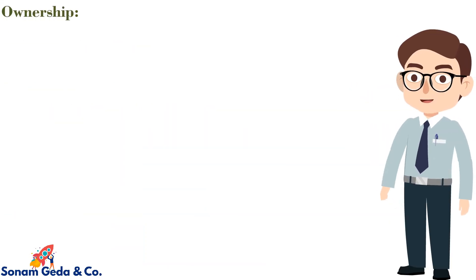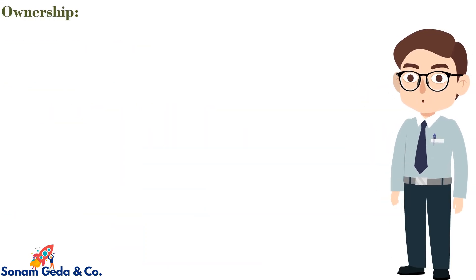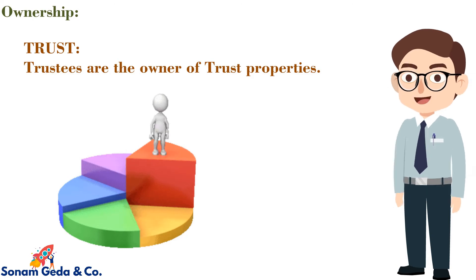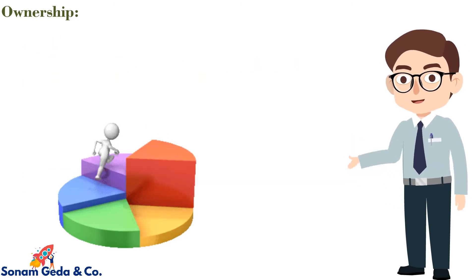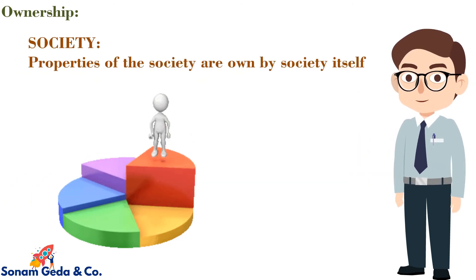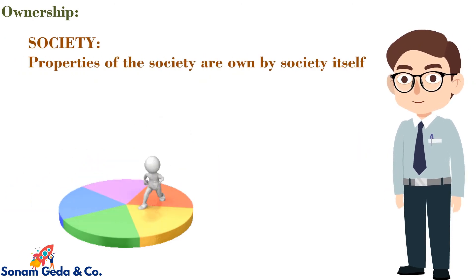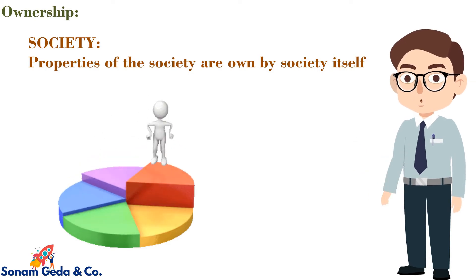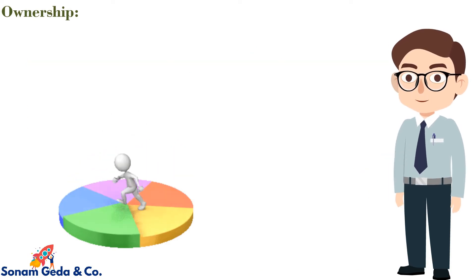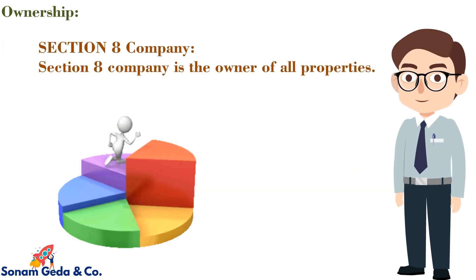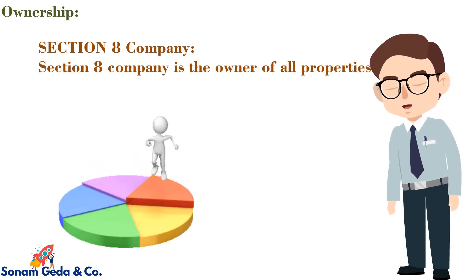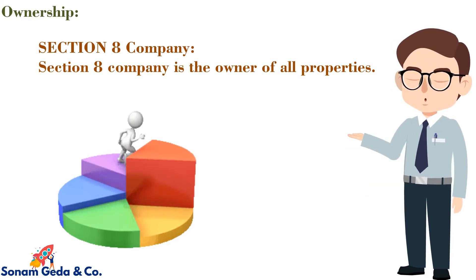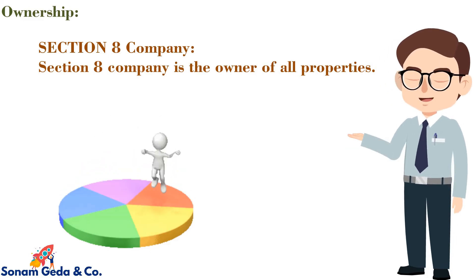Ownership: for a Trust, the trustees are the owners of trust properties. For a Society, the properties of the society are owned by the society itself. For a Section 8 Company, the Section 8 company is the owner of all properties.